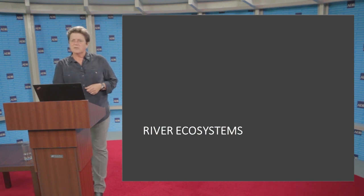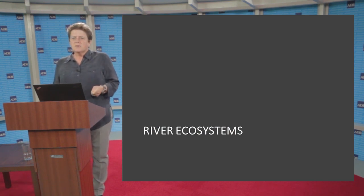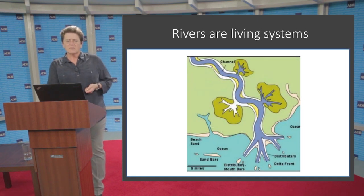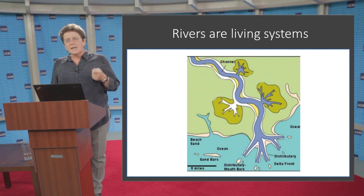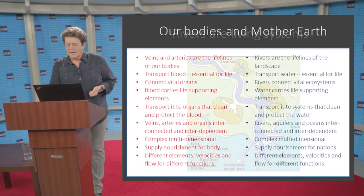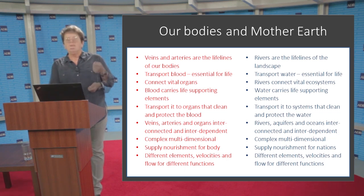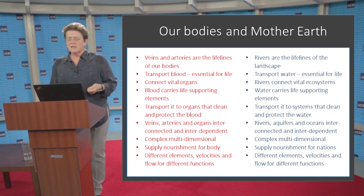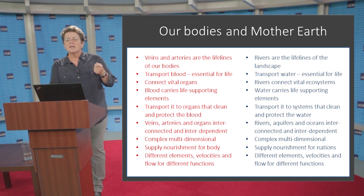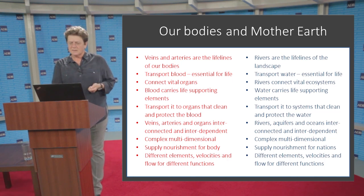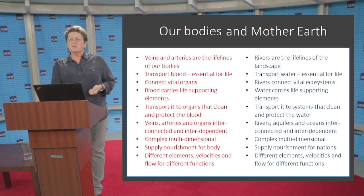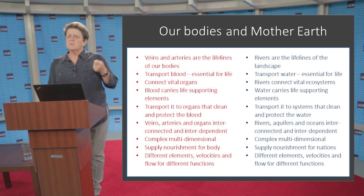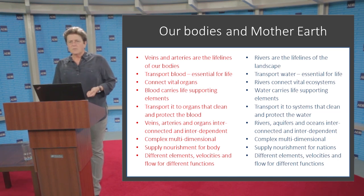Let's start by going through some aspects of ecosystems. When it comes to environmental flows, the most important aspect is that these are living ecosystems. A colleague in India drew an analogy between our bodies and the veins and arteries in our bodies, and rivers flowing through the earth. Rivers are the lifelines of the landscape — they transport water essential for life, connect vital ecosystems, and carry life-supporting elements. Rivers, aquifers, and oceans are interconnected and interdependent, multidimensional, and supply nourishment for nations. Different elements, different velocities, and different flows are required to support different functions.